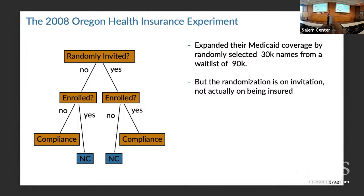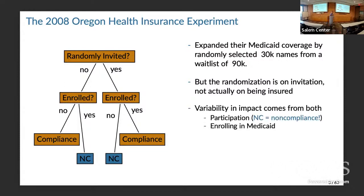So those who are randomly invited — many of them enroll (we call them compliant) and many do not. Likewise, for those not invited, many did not enroll, but some still managed to enroll — maybe their life circumstances changed and they now qualify for standard Medicaid. We basically have four groups. These compliers complied differently: some said yes when offered; others found their way in without being offered. We have two sources of variation — what you choose to do (compliance status) and the actual effects of insurance.